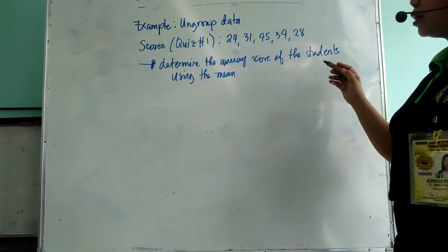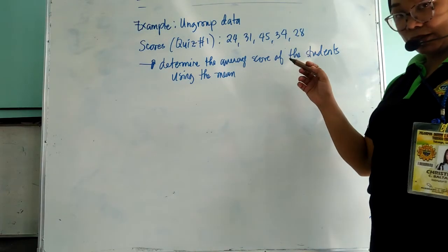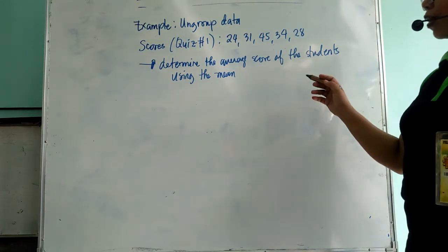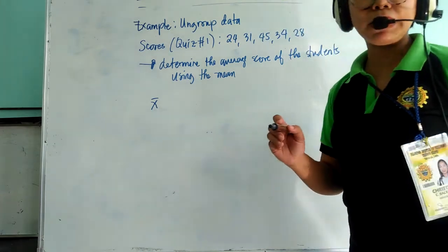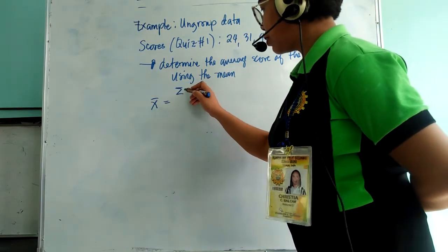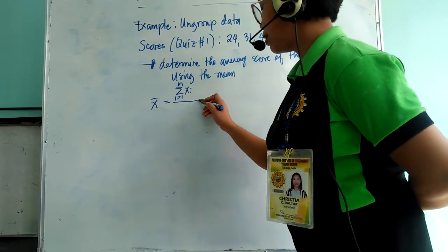Since we only use sample students or we only get the mean score of 5 students, we will be calculating the sample mean. Sample mean is equal to the sum of x sub i, i from 1 to small n divided by small n.